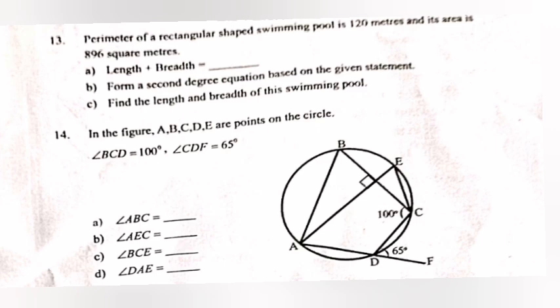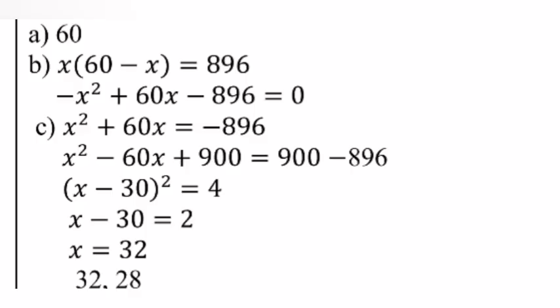Question 13: The perimeter of a rectangular swimming pool is 120 meters and its area is 896 square meters. Part A: Length plus breadth equals 60. Part B: Form a second-degree equation: X(60 minus X) equals 896, giving minus X² plus 60X minus 896 equals 0. Part C: X² minus 60X plus 900 equals 4, so (X minus 30)² equals 4, X minus 30 equals 2, X equals 32. Length is 32 m and breadth is 28 m.